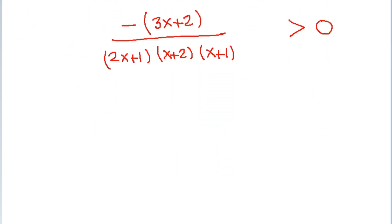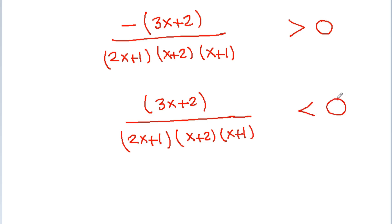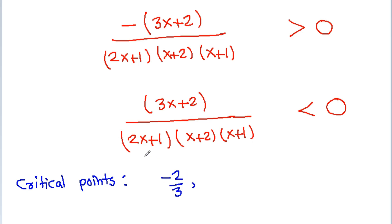Now the critical points: from (3x + 2) we get x = −2/3; from (2x + 1) we get x = −1/2; from (x + 2) we get x = −2; and from (x + 1) we get x = −1.